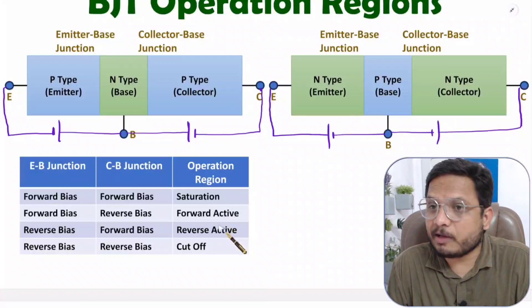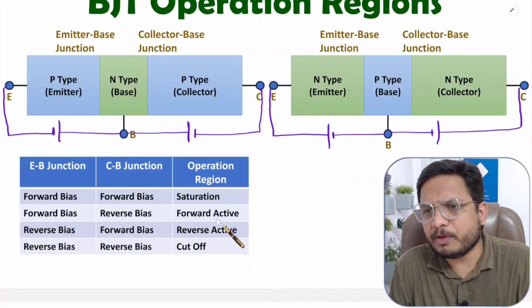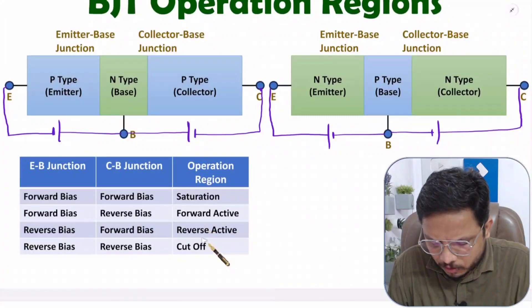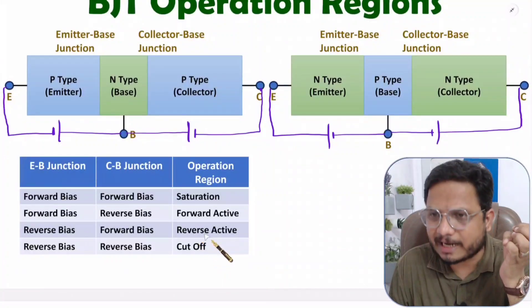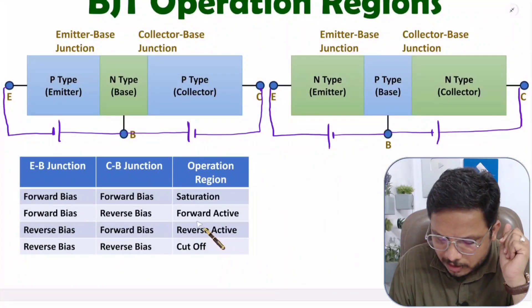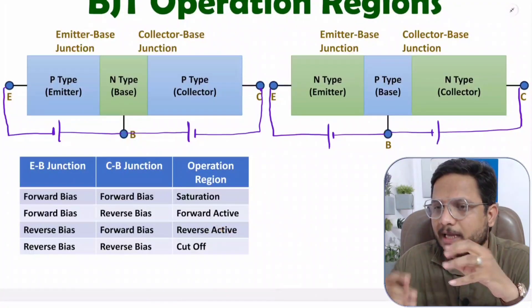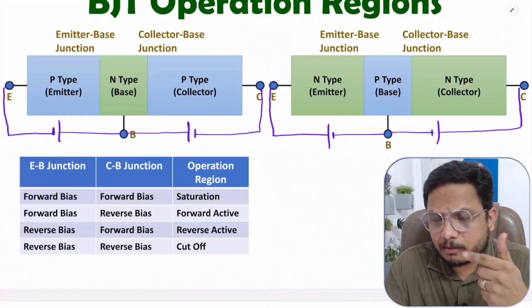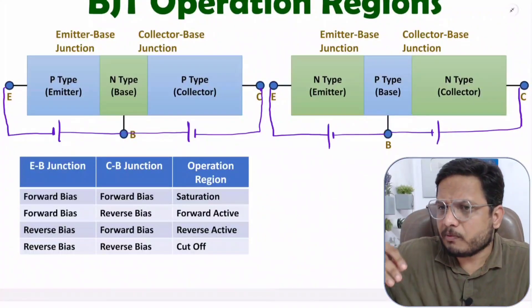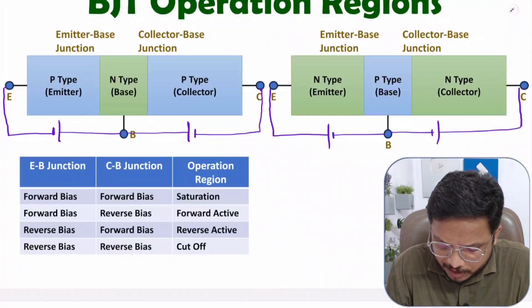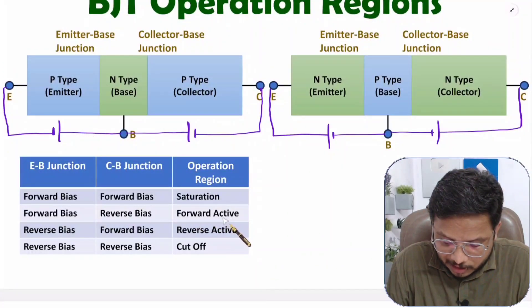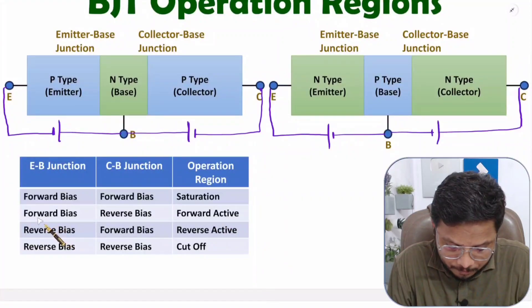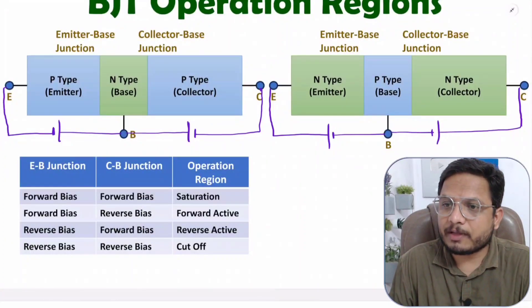In active region, we will mostly be using the forward active region. There are very limited applications for reverse active. Usually we use the transistor in forward active region only — where we can use the transistor as an amplifier and in a variety of applications. In forward active region, the emitter-base junction is in forward bias and the collector-base junction is in reverse bias. Let me show you that with common base configuration.